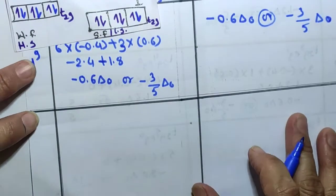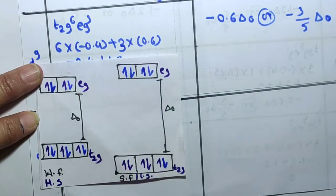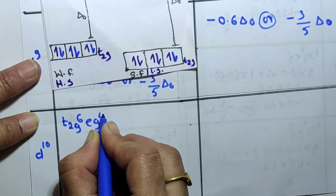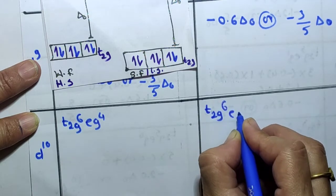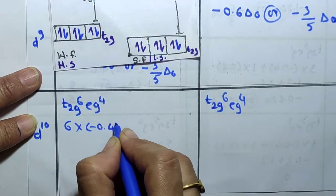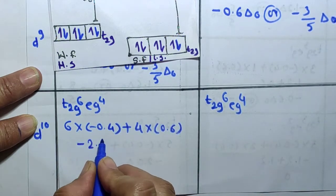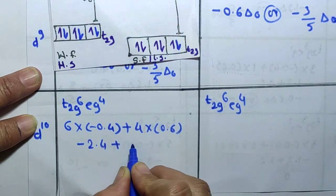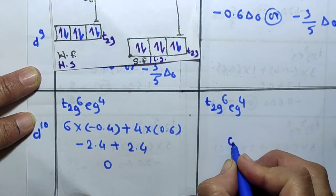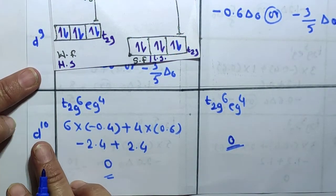For the d10 configuration, all electrons are paired. Configuration: t2g = 6, eg = 4. CFSE = 6 × (−0.4) + 4 × (0.6) = −2.4 + 2.4 = 0. The CFSE value is zero for both high spin and low spin in the d10 configuration.